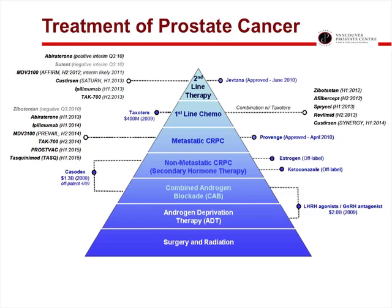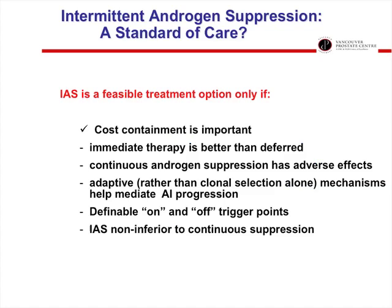Let's start with cost containment. In our system it's clear that cost containment is important. Hormone therapy is the single greatest burden on the provincial health care cancer budget in most provinces across Canada. With combined androgen deprivation and CAB totaling over $3 billion a year globally, if we're going to afford new targeted therapies for smaller populations, we need cost savings. Intermittent therapy is one way to save on health care costs, as long as it doesn't compromise survival.